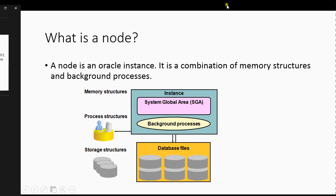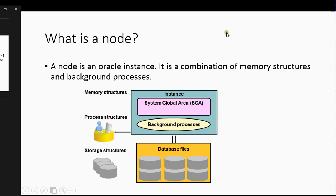In terms of what a node is — going back to basics — an instance is the combination of memory structures and background processes. You can think of memory structures as the SGA: the database buffer cache, the redo log buffer. For background processes, you can think of processes like PMON, SMON, and the archiver. So in RAC, each node is essentially a regular Oracle instance.